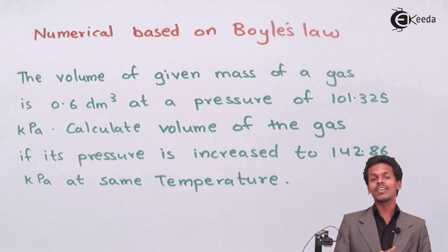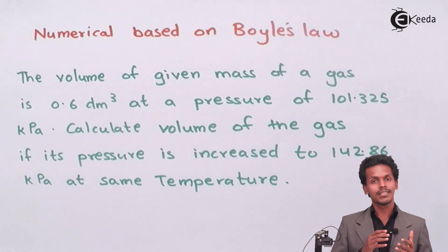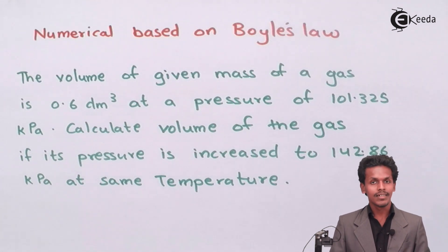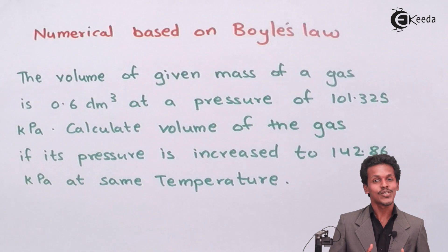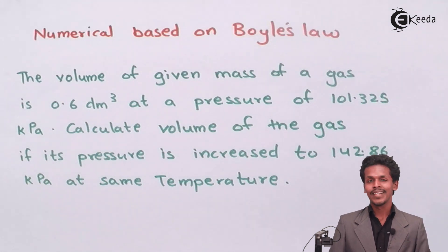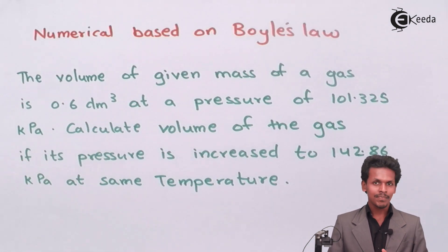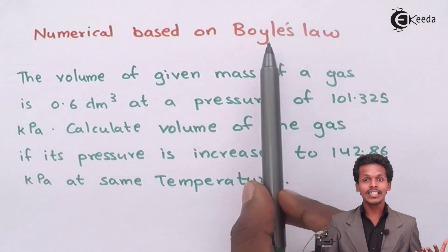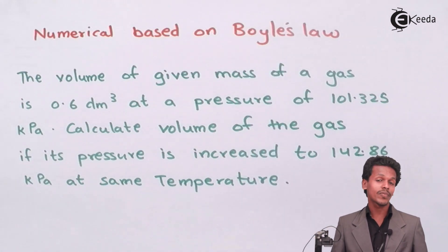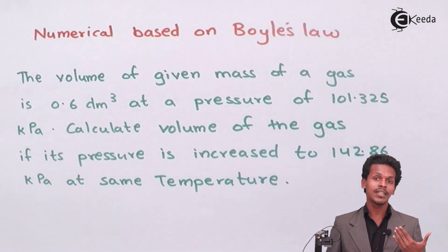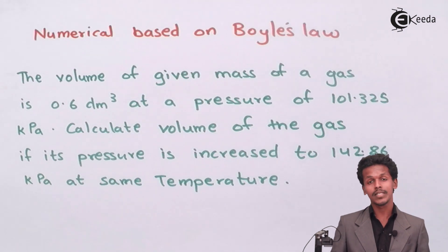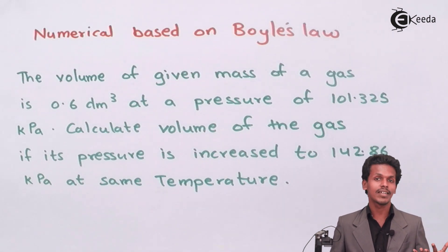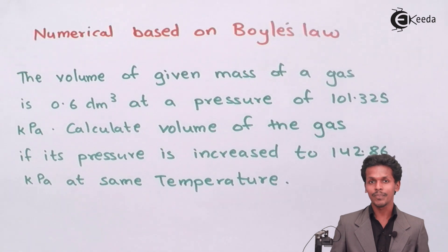So how can we predict whether this numerical is based on Boyle's Law, Charles' Law, Gay-Lussac's Law, or something else? The thing is we can easily predict it. Here you can see that this is a numerical based on Boyle's Law. For example, if it comes in your exam, how can you predict whether it is a numerical based on Boyle's Law?